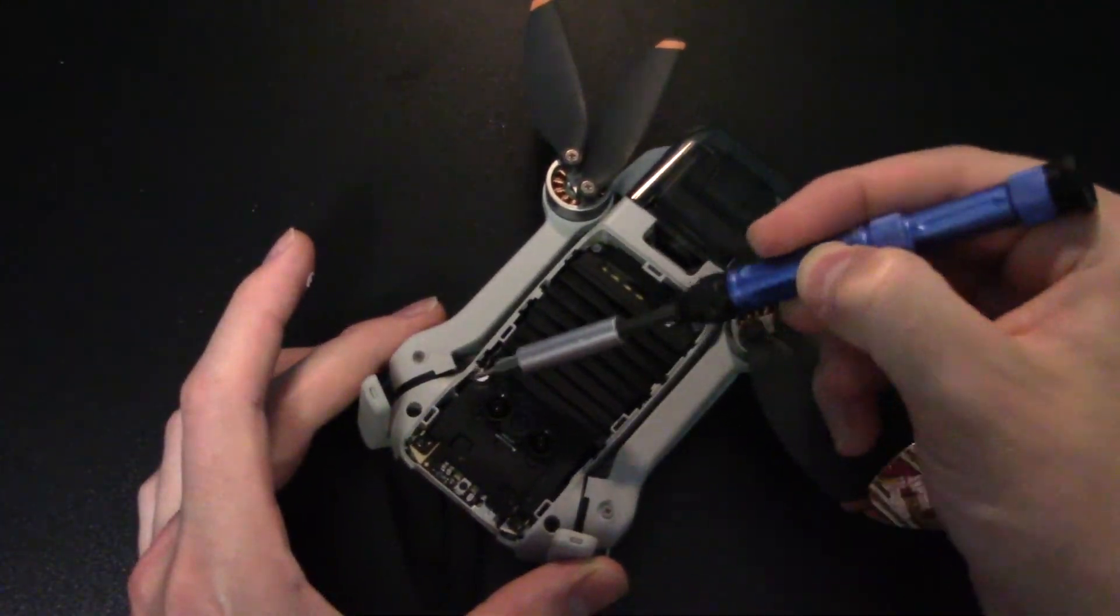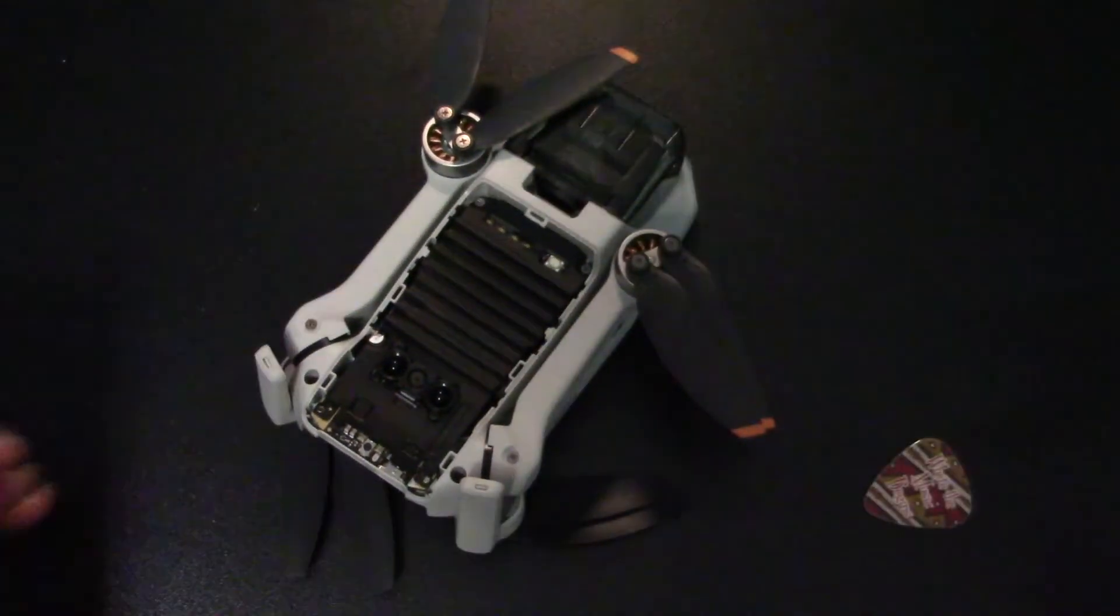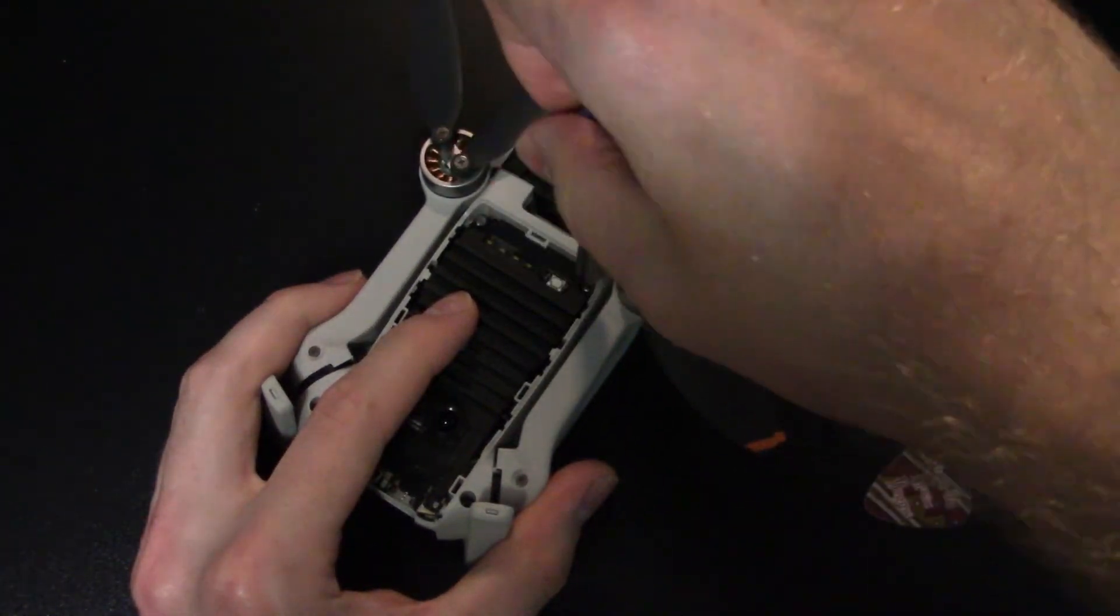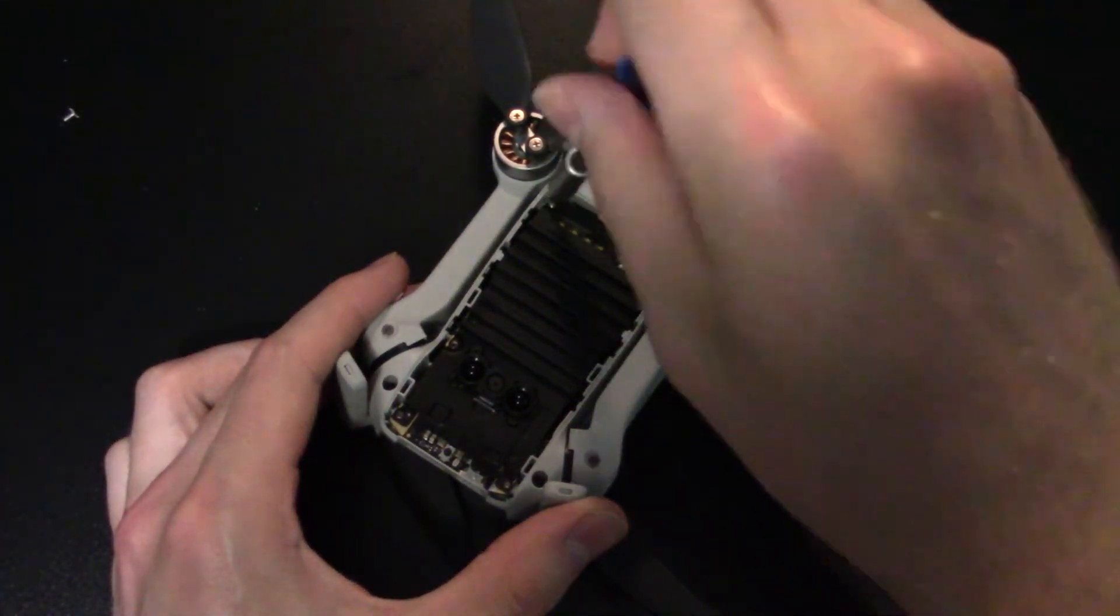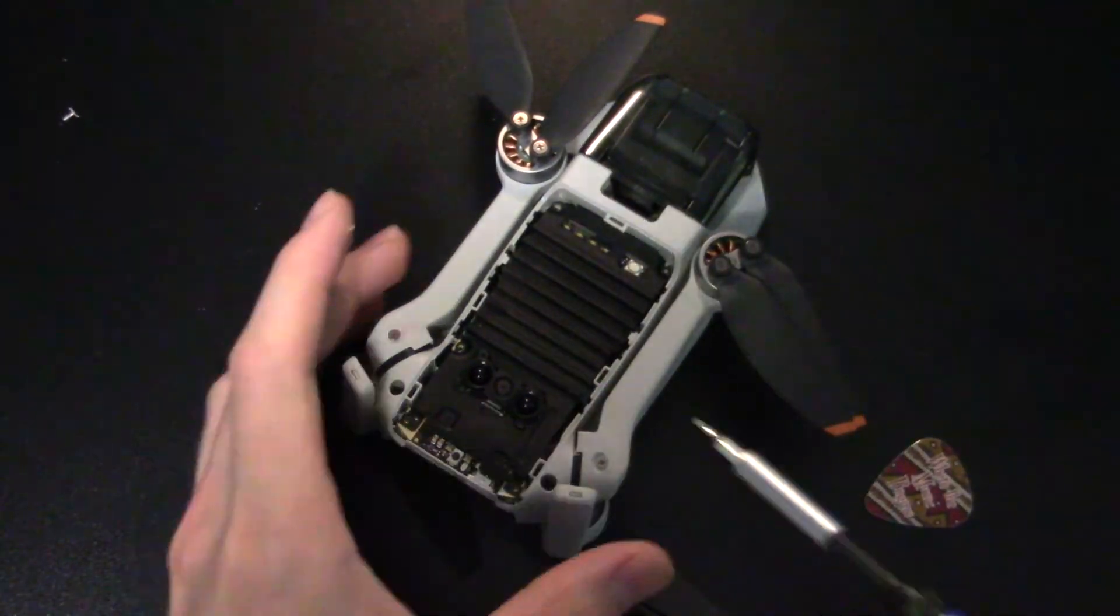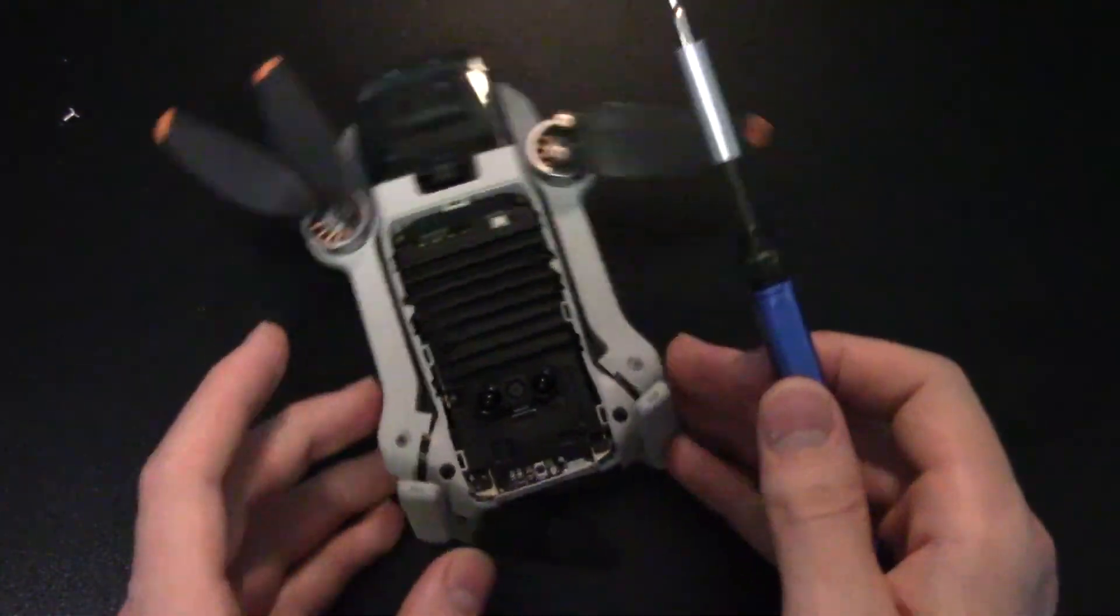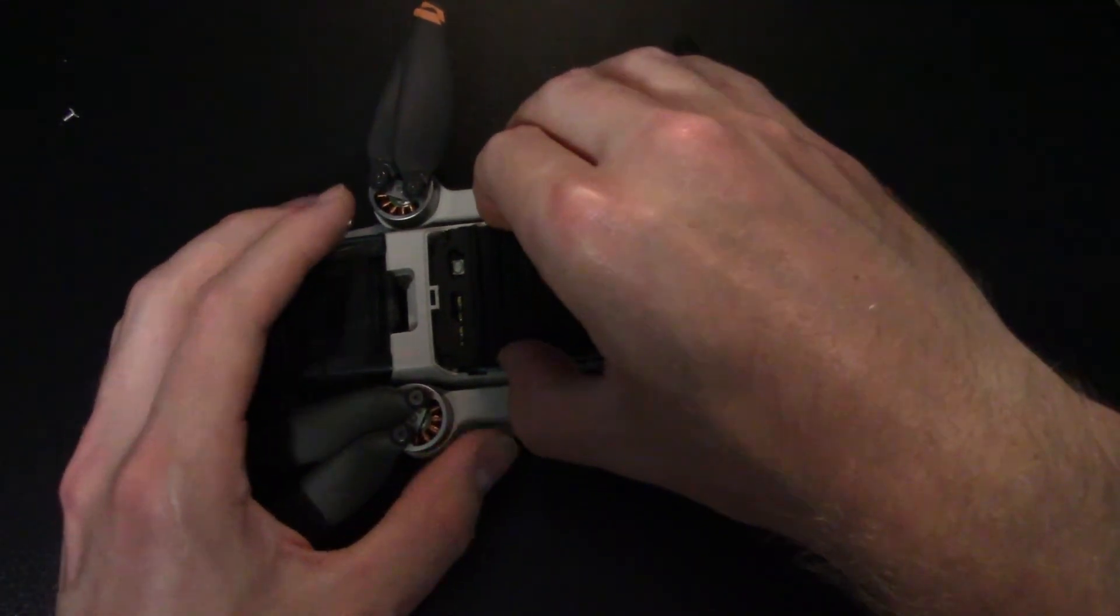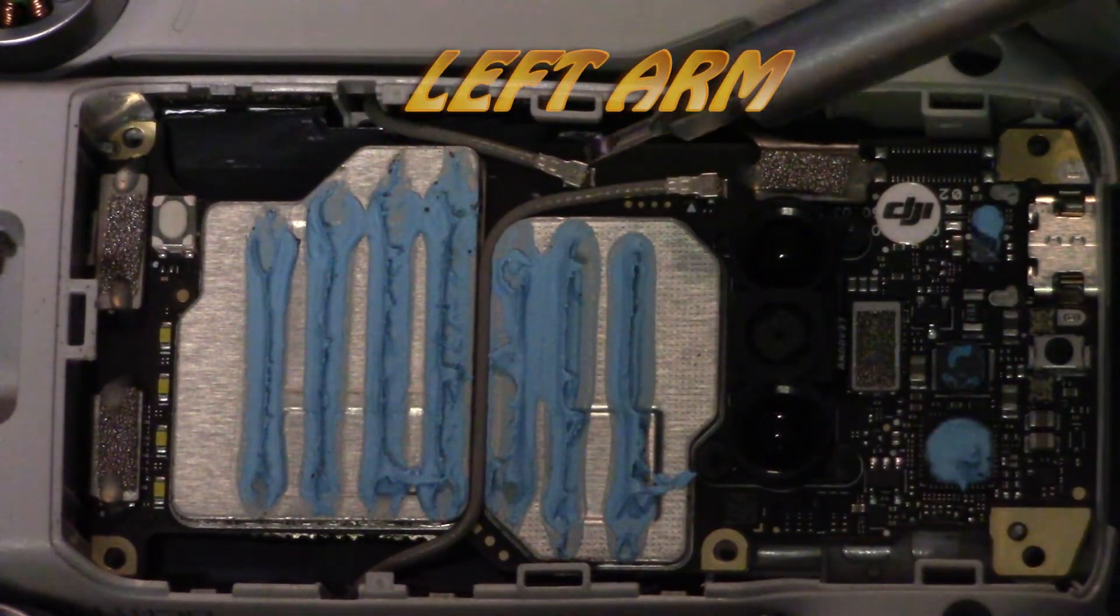Then you have three screws that you have to get at. One is covered by a sticker or something to probably void the warranty. Once you dig that off, these are all Phillips as well. Then you can take a slot screwdriver and just pry open the heat shield here.